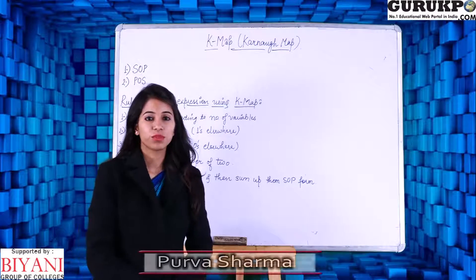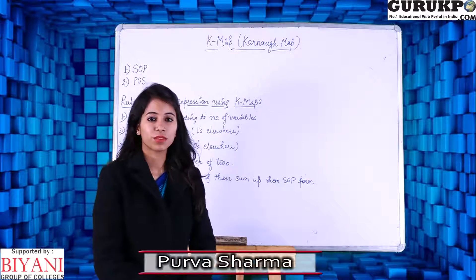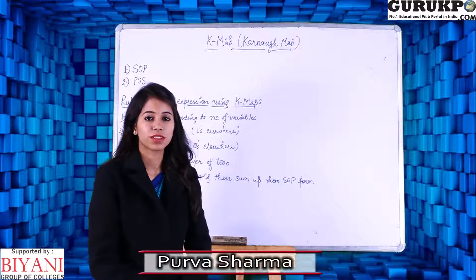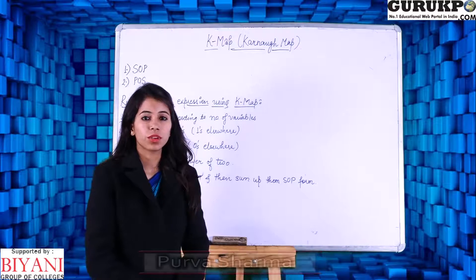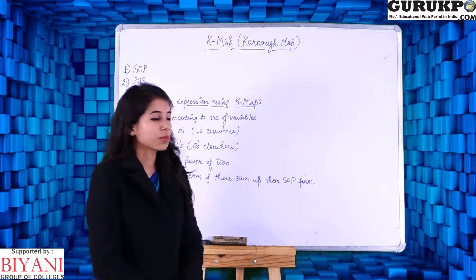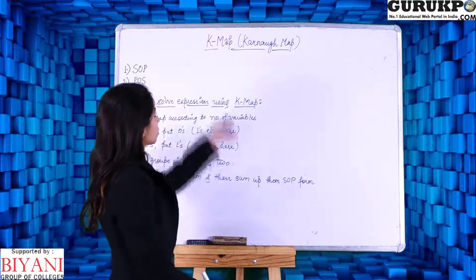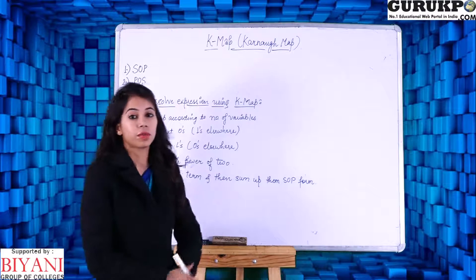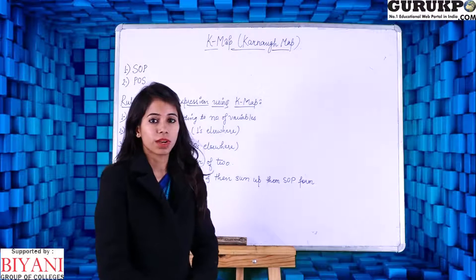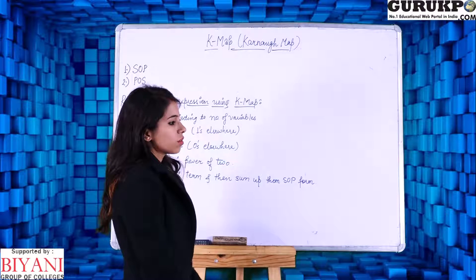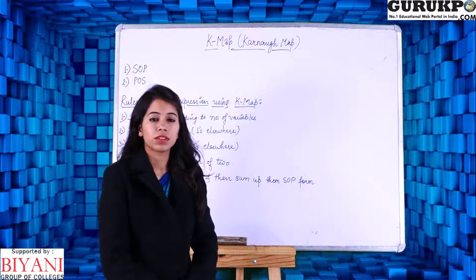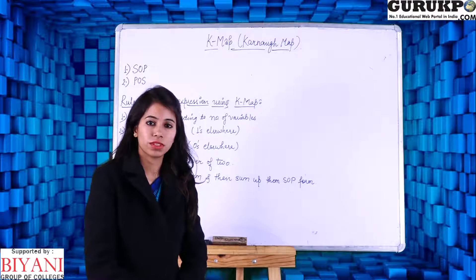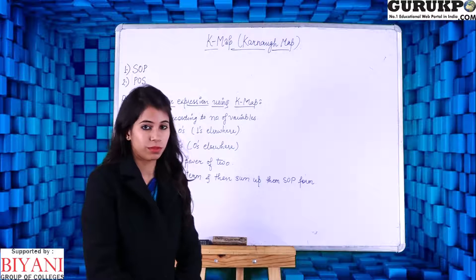Hello friends, my name is Pulva Sharma, Assistant Professor of Physics at Biyanigurth College, Jaipur. Today on behalf of Guru KPO, I am going to discuss the topic KMAP. KMAP stands for Karnaugh map. A Karnaugh map is a table-like representation, but it gives more information than a truth table.